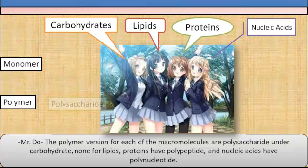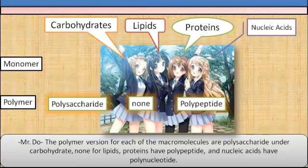The polymer version for each of the macromolecules: polysaccharide under carbohydrate, nothing for lipids, proteins have polypeptide, and nucleic acids have polynucleotide.